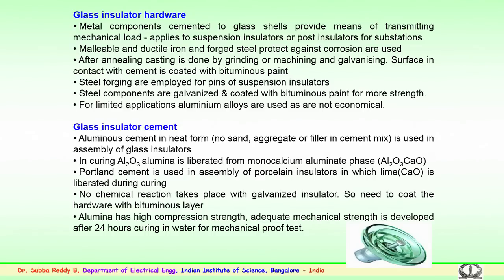The surface in contact with the cement is coated with bituminous paint. Steel forging is carried out for pins of suspension glass insulators; these steel components are further galvanized and coated with bituminous paint to obtain more strength. For some limited applications, manufacturers also employ aluminum alloys, though these are not very economical.